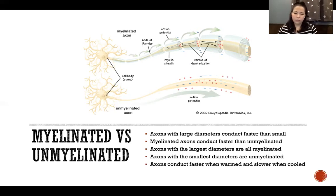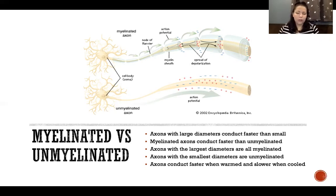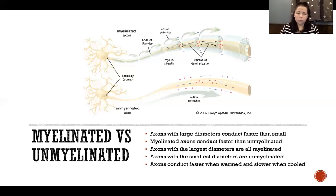Axons conduct faster when warmed and slower when cooled. That's part of why icing something that hurts helps numb the pain — the cold slows down the action potentials coming from the nerve receptors traveling to the central nervous system. When we cool the nerves, we're actually slowing down their communication of sensory information back to the central nervous system.